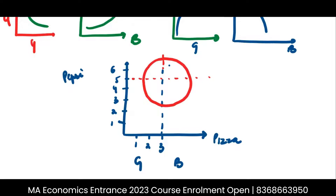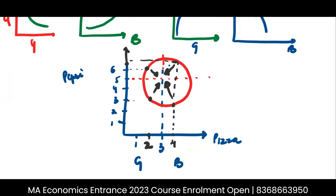This entire circle is your IC. If you are consuming, for example, two units of pizza and six units of Pepsi, you're on this part of the IC. If you're consuming two units of pizza and three units of Pepsi, you're on this part. If you are consuming four units of pizza — where pizza is a bad good — and 2.5 units of Pepsi, you are here. Where you're consuming more of both bad goods, your aim is to reach towards the point of satiation. So ultimately, the shape of the ICs would be circles.